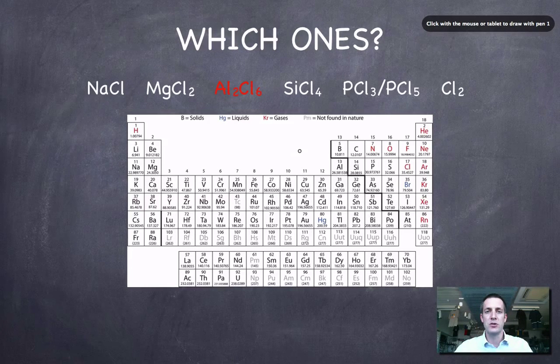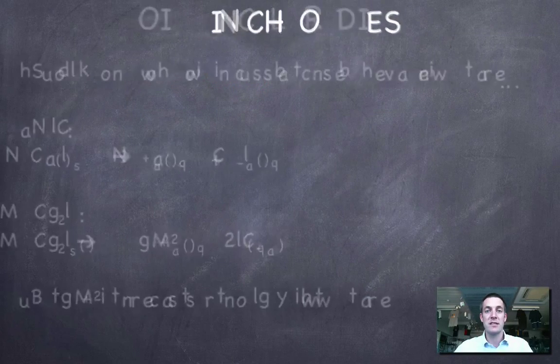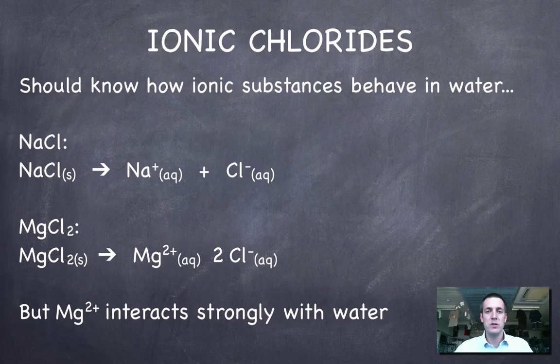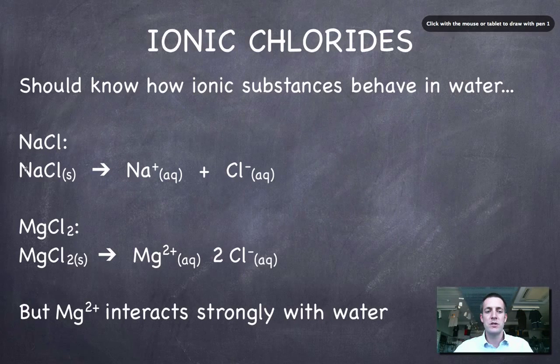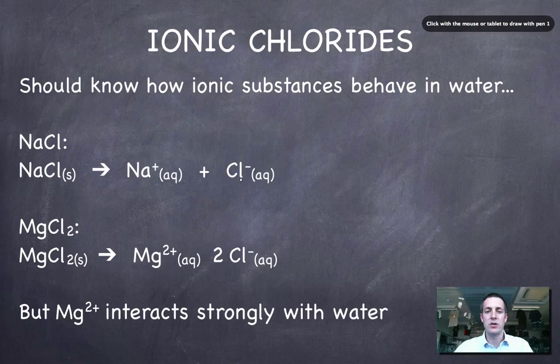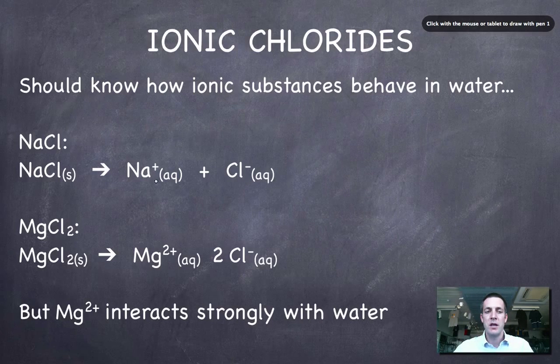So let's start off with the ionic chlorides: sodium chloride and magnesium chloride. We should know that when you dissolve a solid that is ionic in water, it will break up into ions. So writing an equation is quite simple: writing the solid and then its aqueous ions over here. In this particular solution that we formed, we've got neutral ions. This produces a neutral solution.